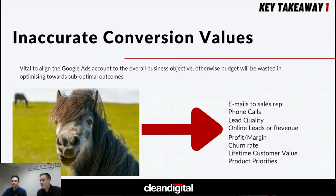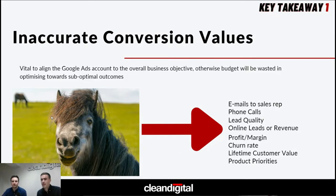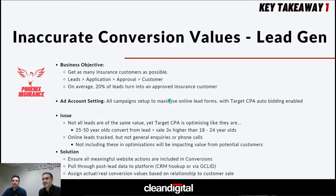Think about phone call tracking and getting the value of those phone calls. A massive one is lead quality — a lead is only as good as the quality it provides. Most businesses talk in sales, not in leads. Similarly for e-commerce, things like profit margin, churn rate, and lifetime customer value are key. Priorities within product themes or services are very important, because not all products or services are the same. Having distinctions at value level at all those stages is very important to reducing waste.